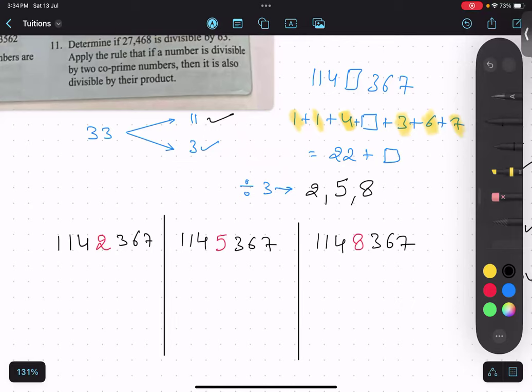So divisibility rule of 11 is we have to add the odd places and even places. So let's add the yellow colors: 7 plus 3 is 10, 10 plus 4 is 14, 14 plus 1 is 15. And even places: 6 plus 2 is 8, 8 plus 1 is 9.